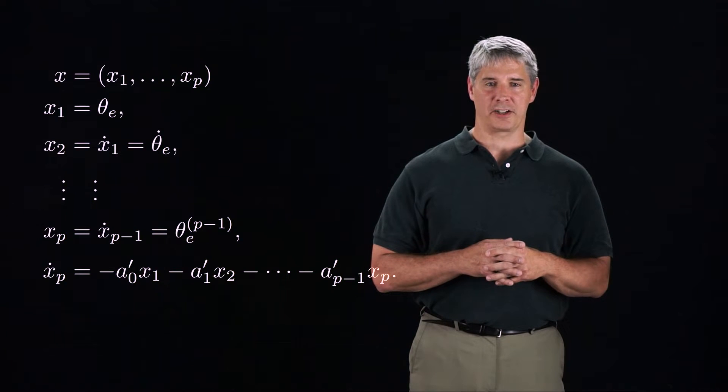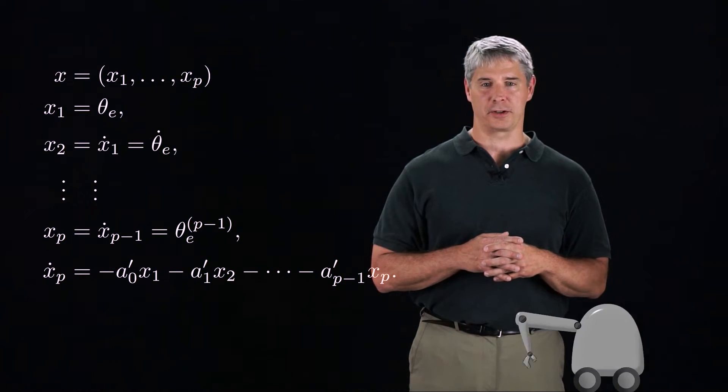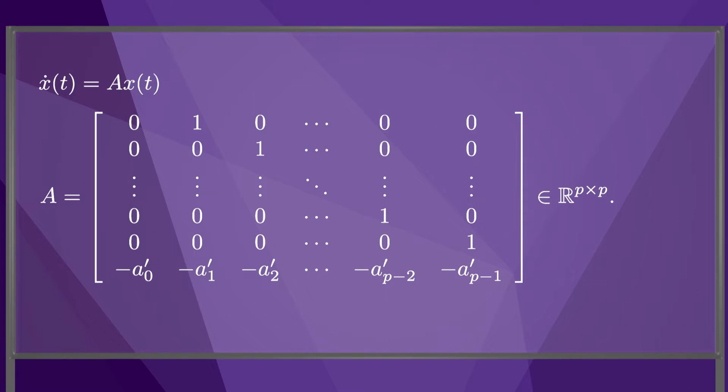With our definition of the state vector x, we can write the p-th order differential equation as a first-order vector differential equation x dot equals A-x, where A is a p-by-p matrix. The solution to this vector differential equation is given by the matrix exponential e to the A-t as we saw in chapter 3.